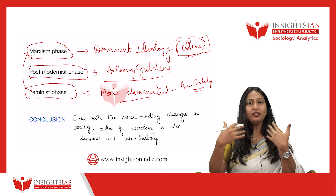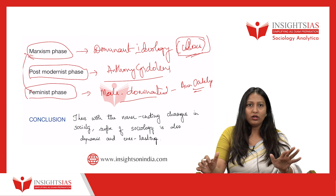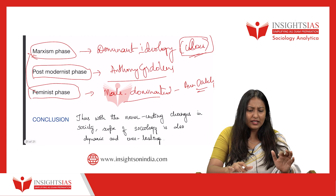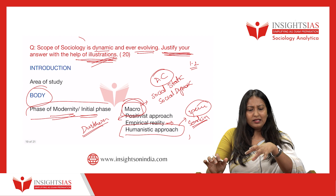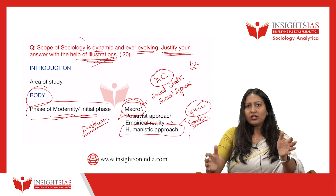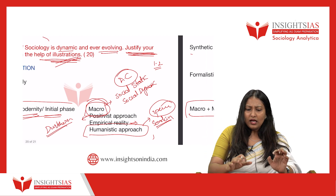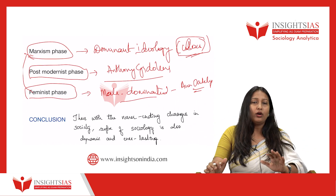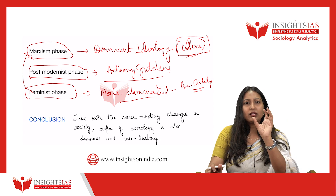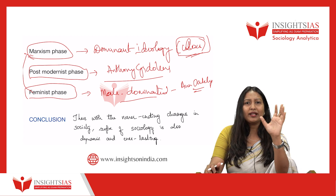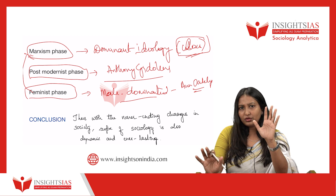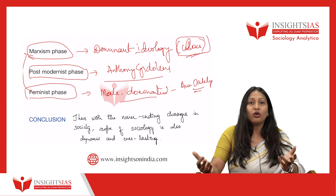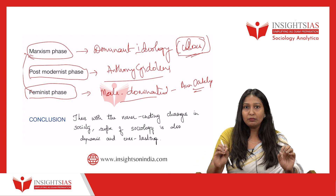Things have changed drastically, and your answer should show all these phases. For the conclusion, keep it very simple — one or two lines. Don't overthink it, as that leads to mistakes. A simple conclusion like: 'Thus, with never-ending changes in society, the scope of sociology is also dynamic and everlasting' works perfectly, since you have already given all the justification above.